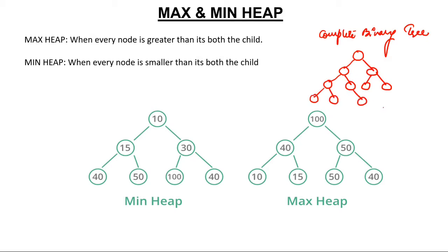Is this a complete binary tree? No, because the left child of this node should come first. If the left child is not filled first then it is not valid. Some arrangements are complete binary trees and some are not — it depends on whether nodes are filled strictly left to right.